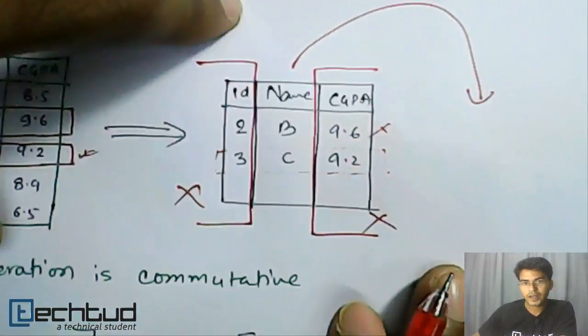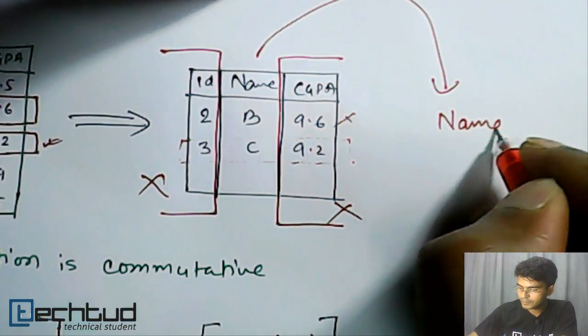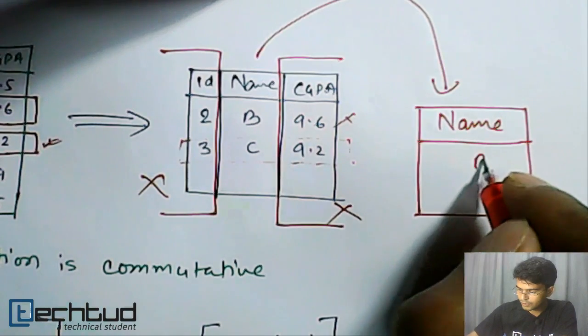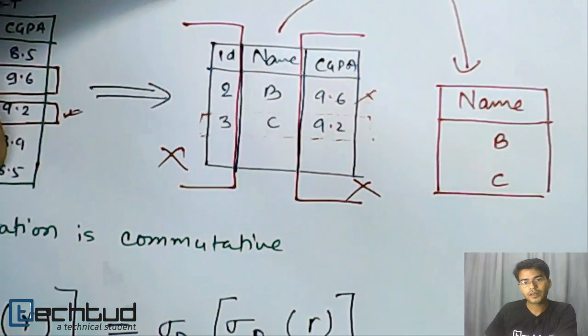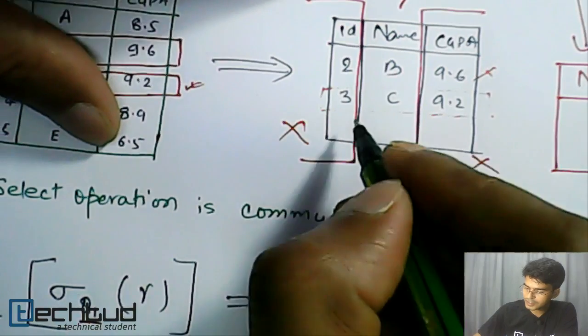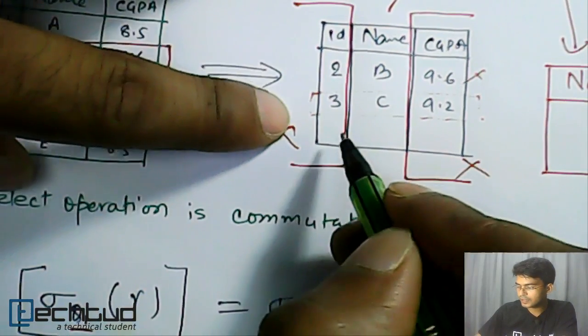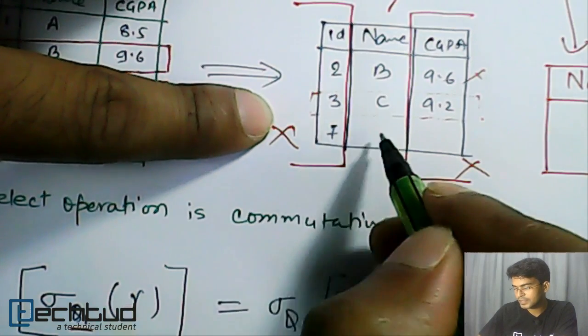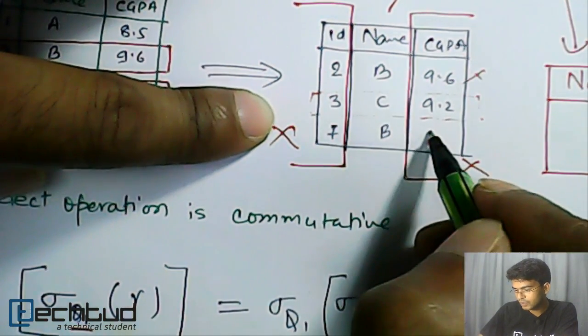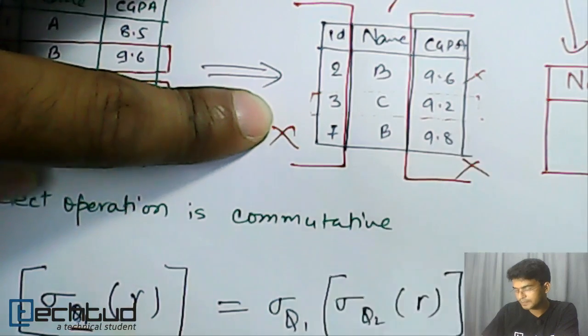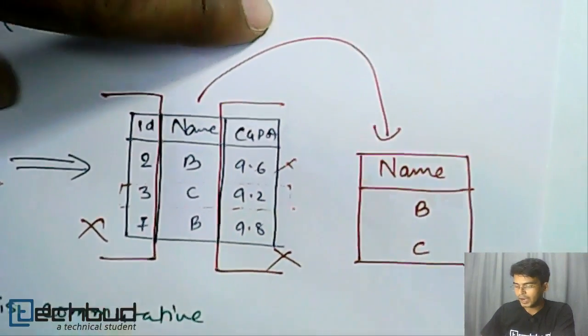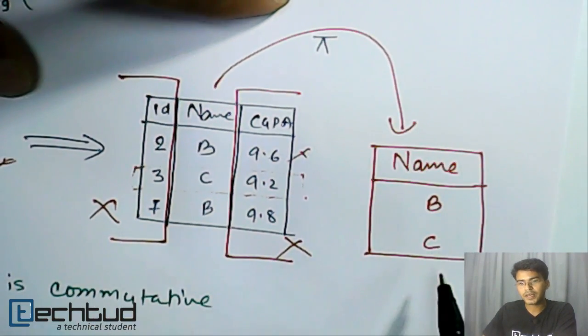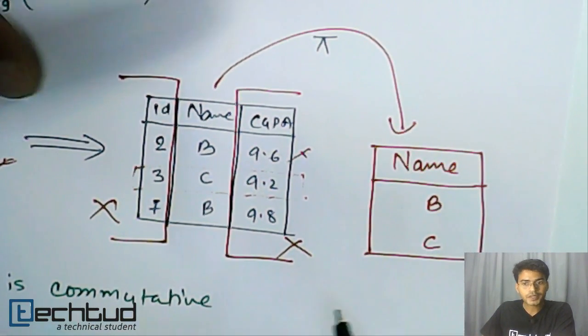What if there are two students? That is, let's say we are getting another row here. I'm just assuming from here that we have let's say ID 7 and B, and it is also 9.8. Now what will it do after this project operation? It will again return the same thing - B and C.